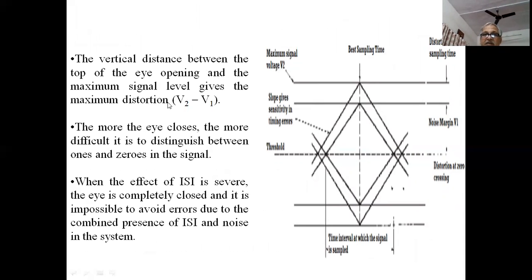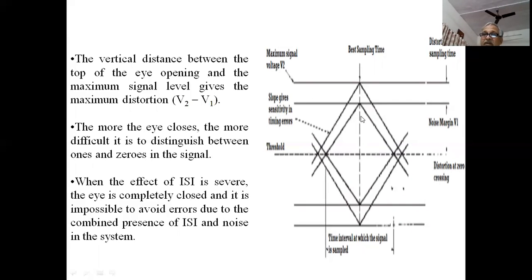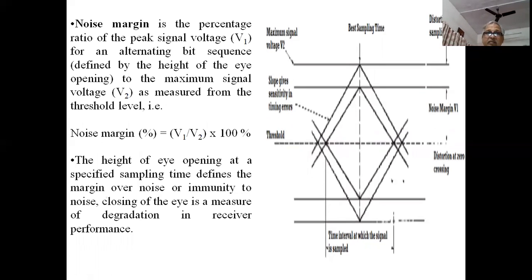The difference V2 minus V1 indicates the eye closure. The more the eye closes, the more difficult it is to distinguish between ones and zeros in the signal. If there is less area of eye opening, it becomes difficult to distinguish between zero and one values. When the effect of inter-symbol interference is severe, the eye is completely closed, making it impossible to avoid errors due to the combined presence of ISI and noise. When the eye opening is large, we can distinguish the signal at the receiver end.